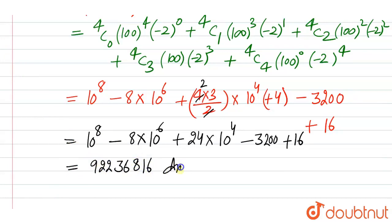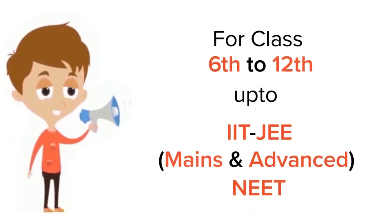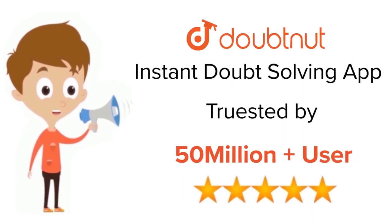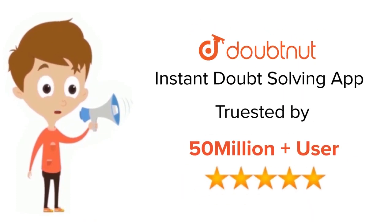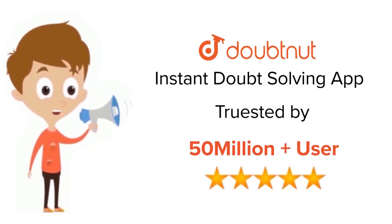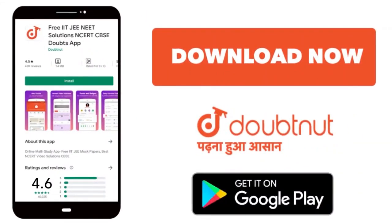The answer is 9,22,36,816. This is the final answer. Thank you. For class 6 to 12, IIT-JEE and NEET level, trusted by more than 5 crore students — download DoubtNet today.